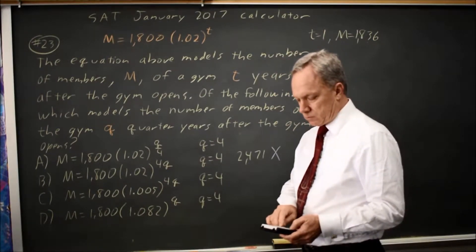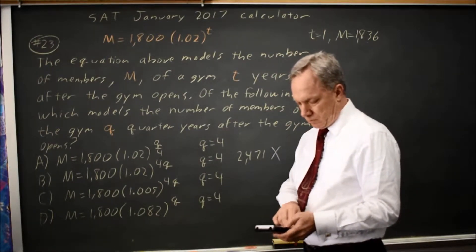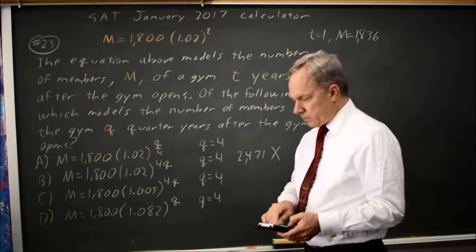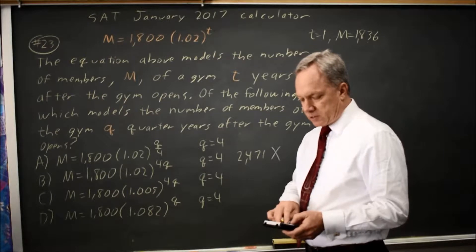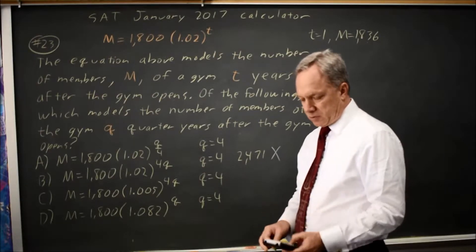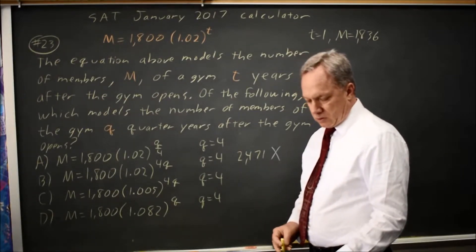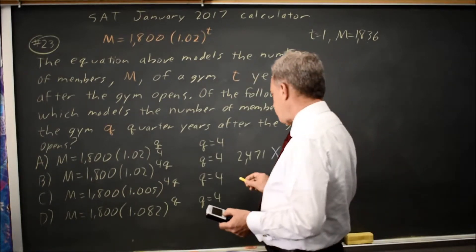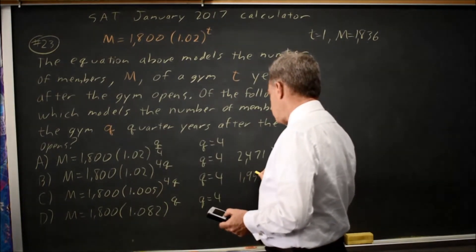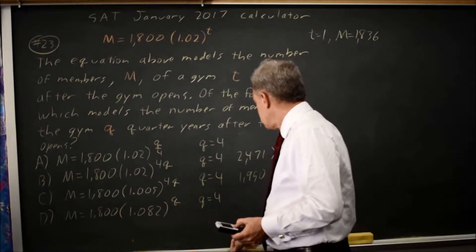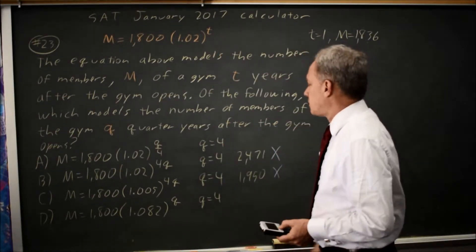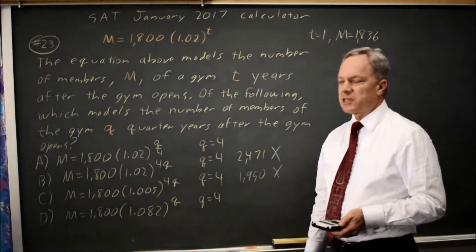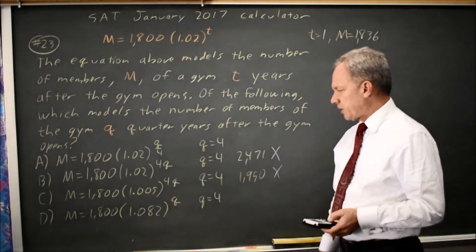Let's try choice C. Again, my exponent is in parentheses, and at q equals 4, I get 1950 members, which is also not the same as I got at t equals 1 year. Since 1 year is the same as 4 quarters, they should give me the same answer.